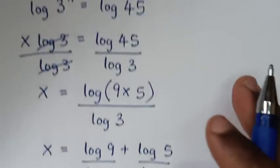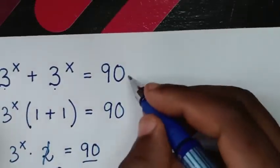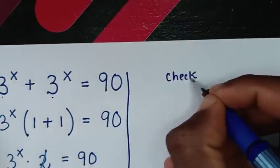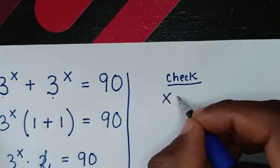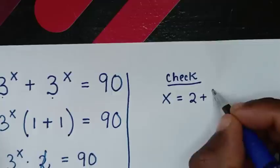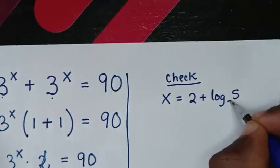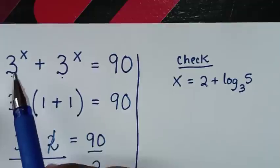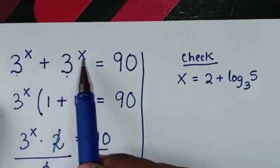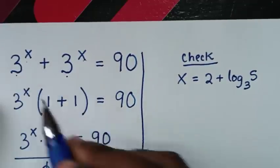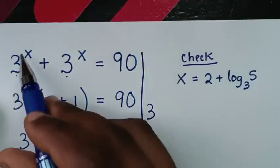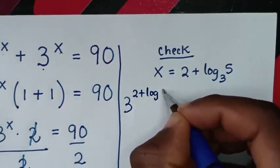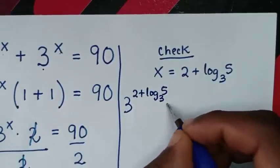Now in the next step, let's check if this answer is correct. To check, for the value of x equal to 2 plus log of 5 base 3, we substitute the value of x into the position of x in the power. So it will be 3 to the power of 2 plus log of 5 base 3.